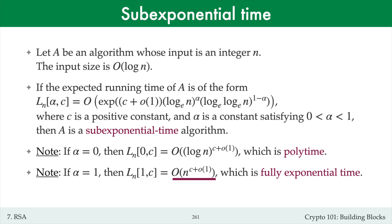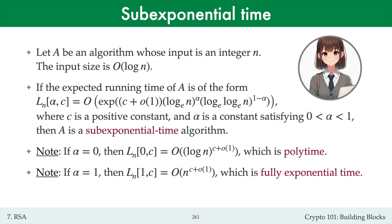And so, when alpha equals 0, algorithm A has a polynomial running time, whereas if alpha equals 1, then A is a fully exponential time algorithm. For alpha between 0 and 1, algorithm A has sub-exponential running time. Note that the closer alpha is to 0, the closer A is to being a polynomial time and therefore efficient algorithm. Note also that the constant alpha is more important than the constant c, because alpha appears as a double exponent, whereas c appears as a level-1 exponent.